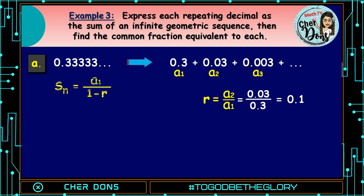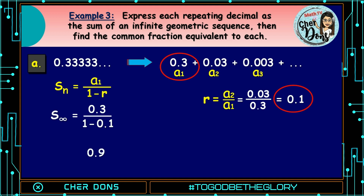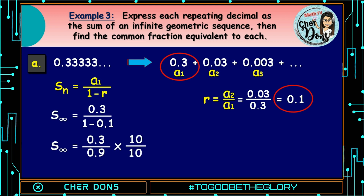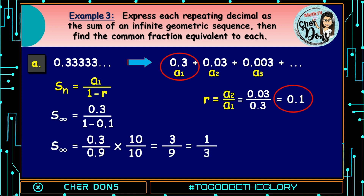Using the formula, s sub n equals a sub 1 all over 1 minus r. Substituting the values, a sub 1 is 0.3 and r is 0.1. Sum to infinity equals 0.3 all over 1 minus 0.1, which equals 0.9. So sum to infinity equals 0.3 over 0.9. To get rid of the decimal, we multiply the top and bottom by 10: 0.3 times 10 is 3, and 0.9 times 10 is 9. We now have 3/9. Simplifying, we have 1/3. Therefore, the answer is 1/3.